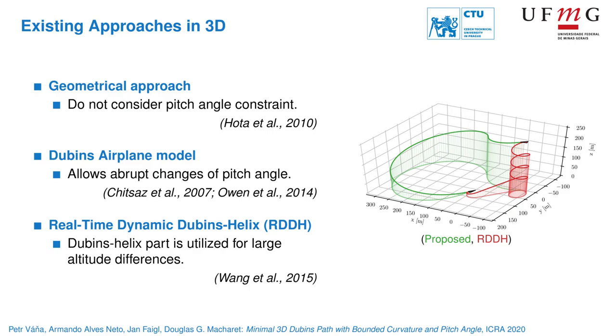In contrast, Dubins Airplane model was designed for aircraft, so it considers the pitch angle constraint and inserts spiral segments when the altitude difference between endpoints is too large. However, the pitch angle is allowed to be changed abruptly.